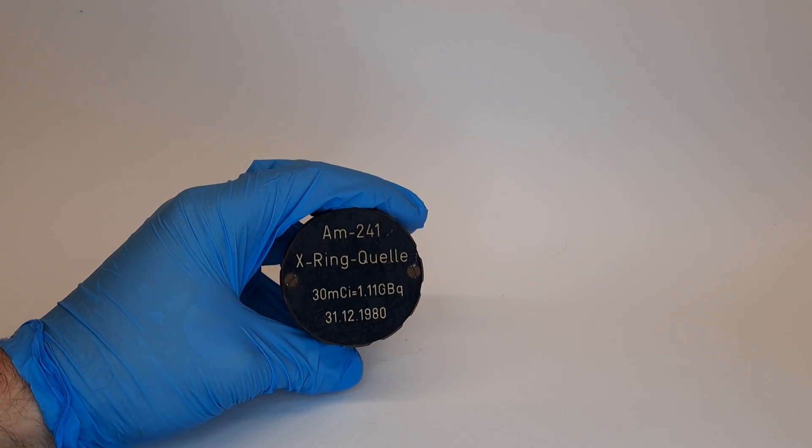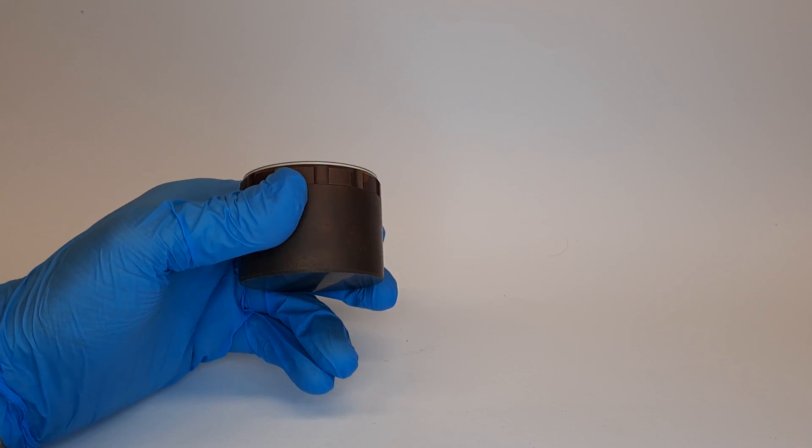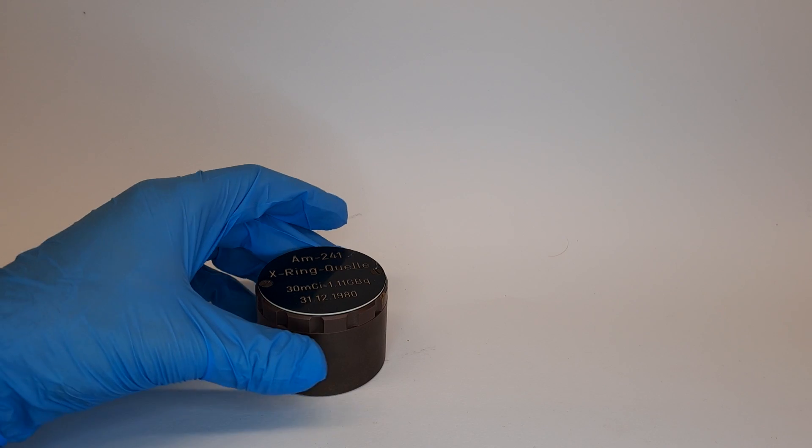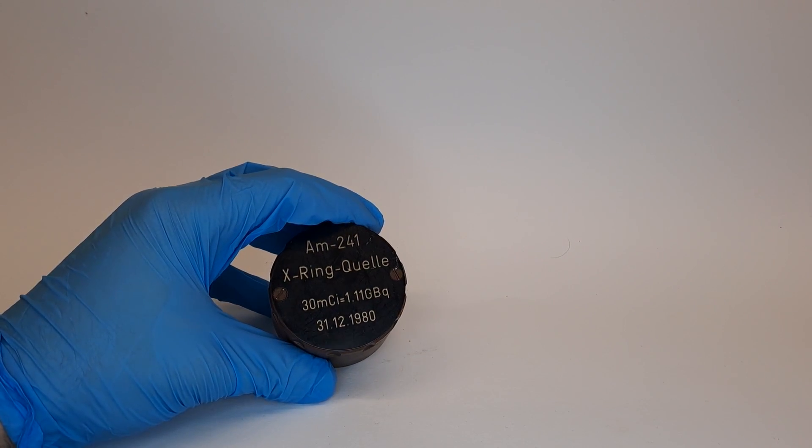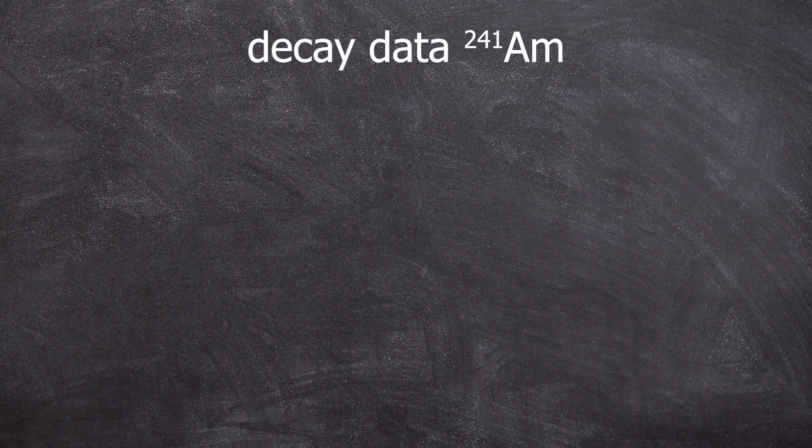This is americium-241 and there is actually quite a substantial amount of it here. Let me quickly provide some nuclear data to help us understand the reason for these measurements and then we can talk a bit more about americium. So, americium-241 has a half-life of 432 years.